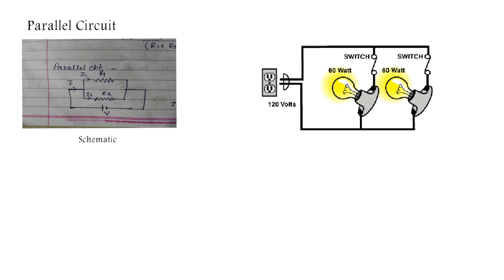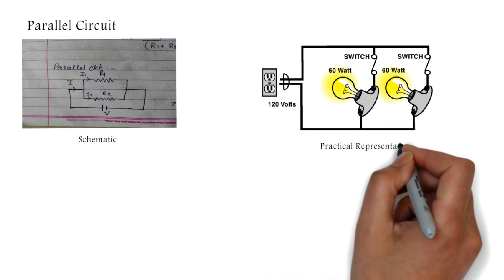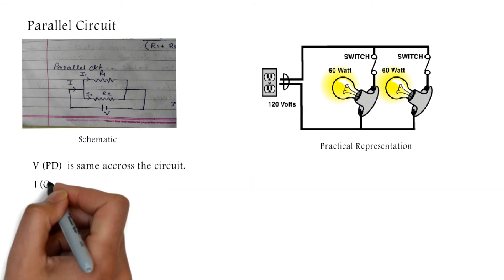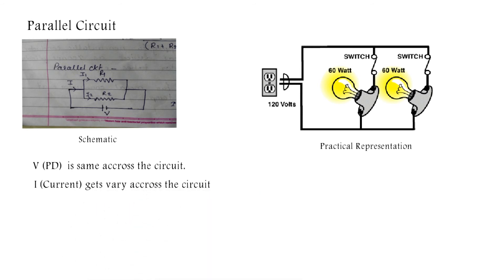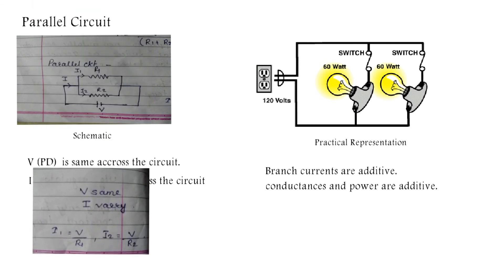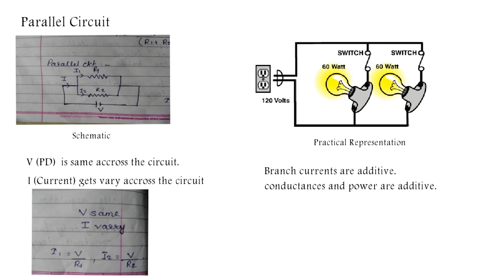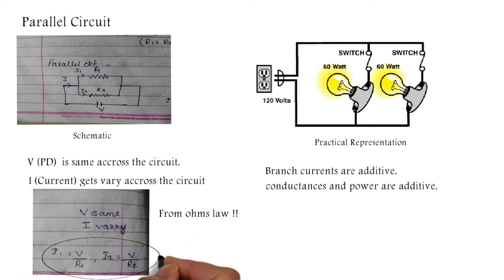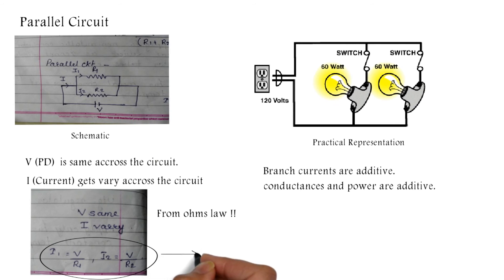Next is the parallel circuit, where R1 and R2 are connected in parallel. This is the schematic representation and this is the actual representation showing how lamps are connected practically in parallel. In this case, the voltage (potential difference) is the same across the circuit, while the currents vary. Branch currents, conductances, and power are additive. From Ohm's Law, I1 equals V divided by R1.